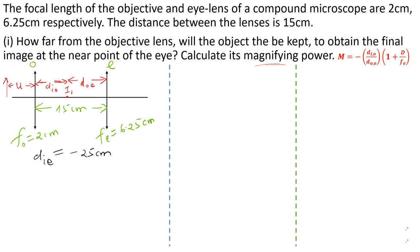We have two lenses: the objective lens and the eyepiece. The lenses are 15 cm apart. The final image is formed at the near point, so the final image distance for the eyepiece equals the least distance of distinct vision, which is negative 25 cm. The final image is virtual.